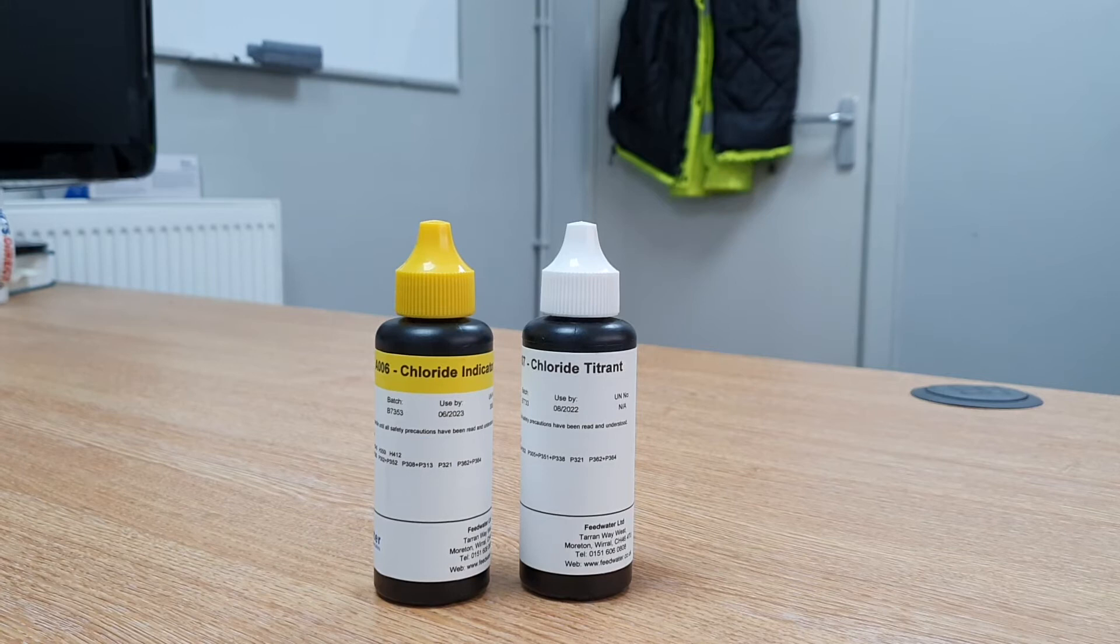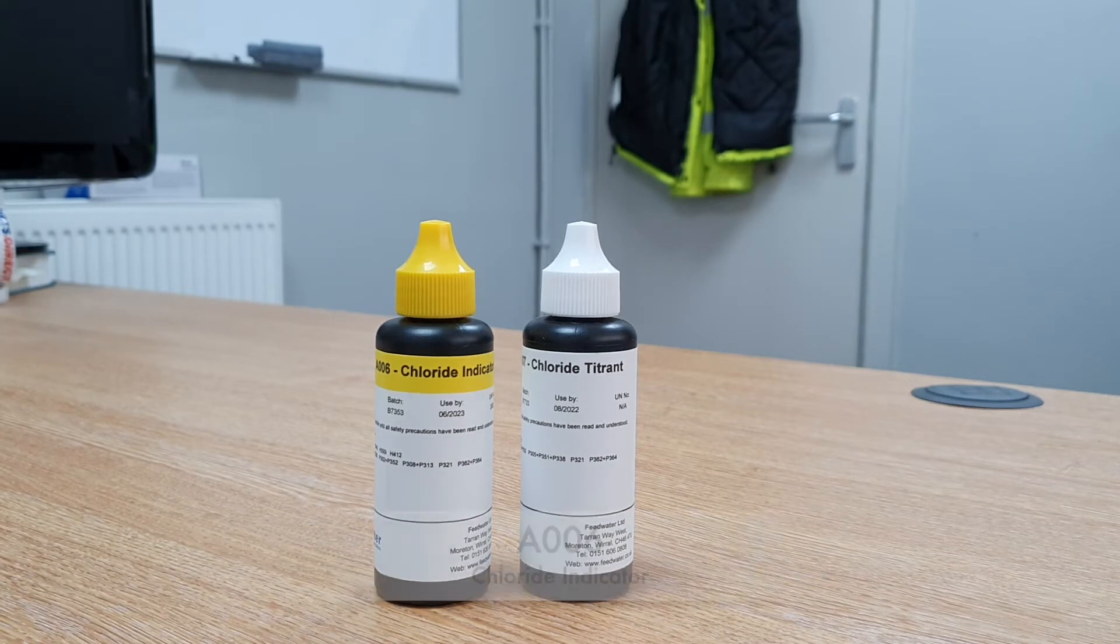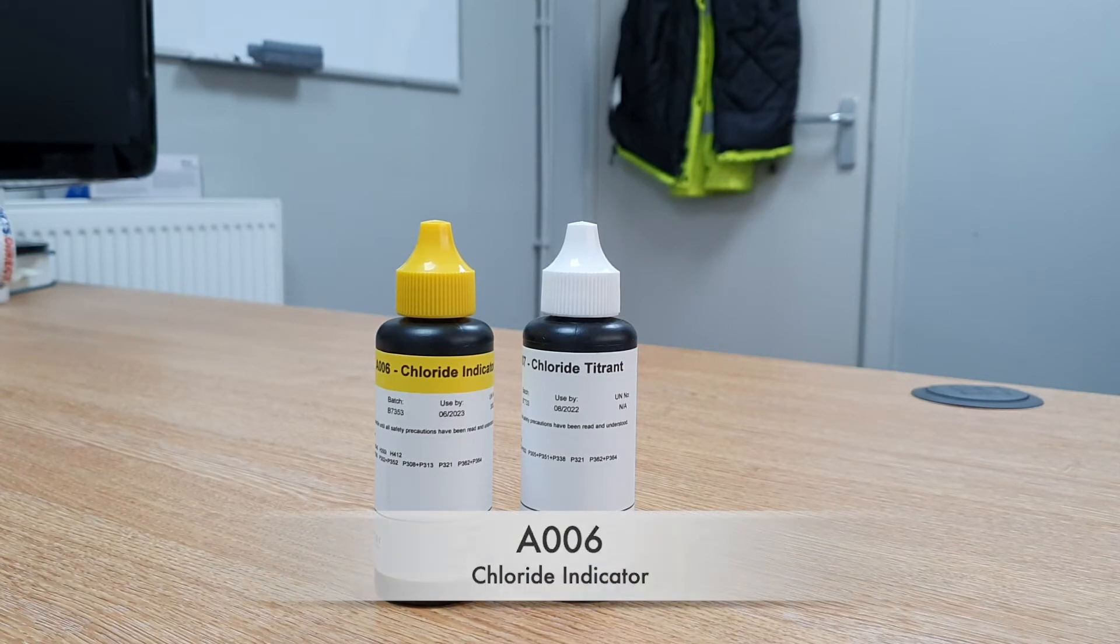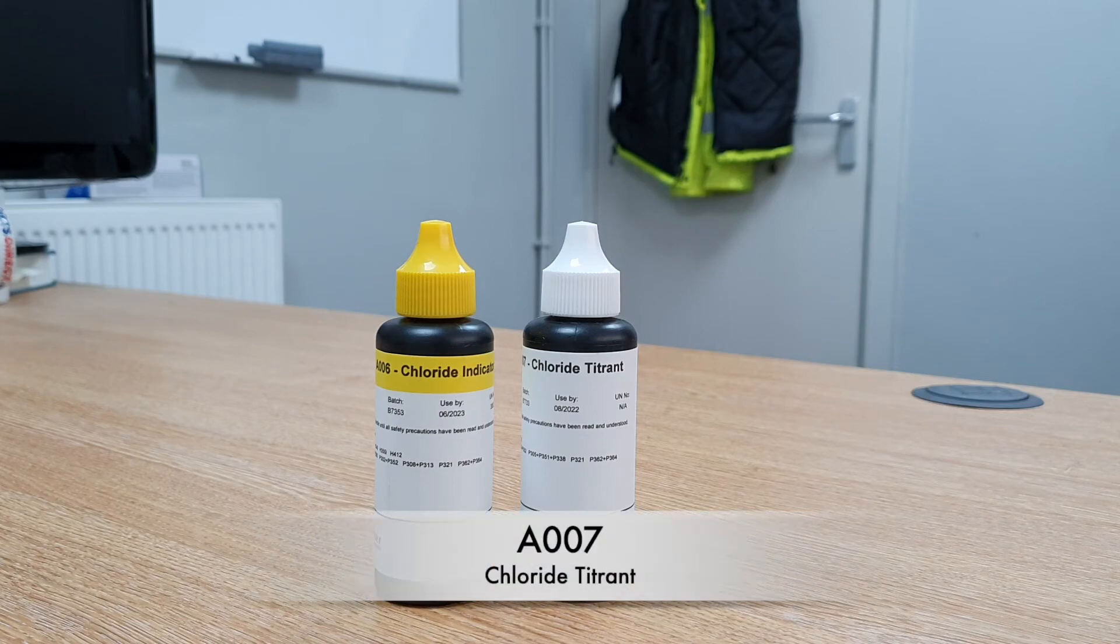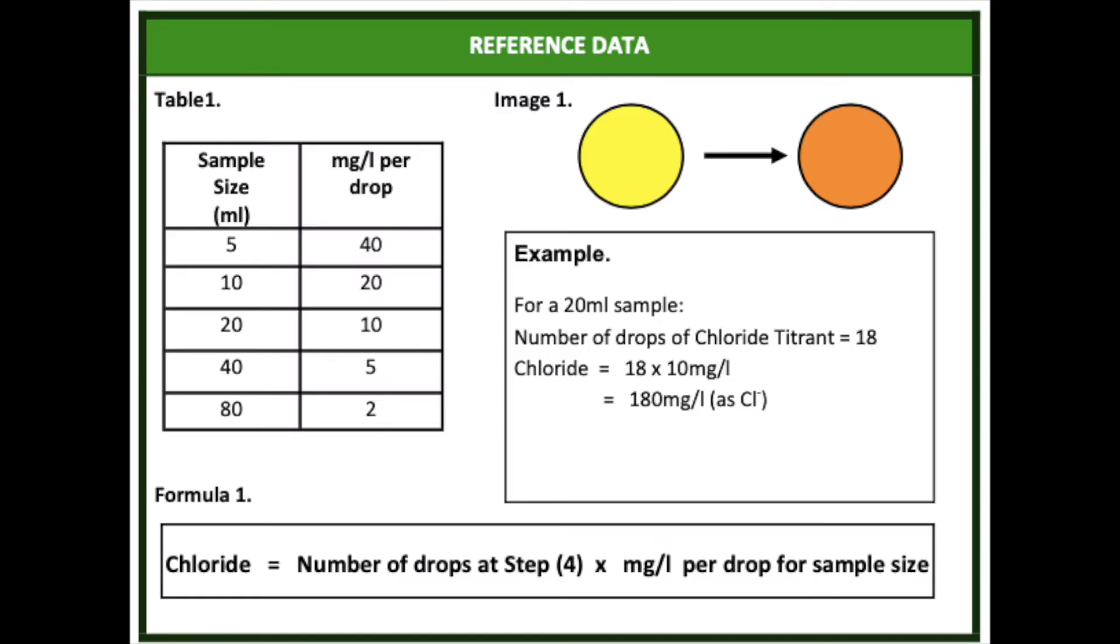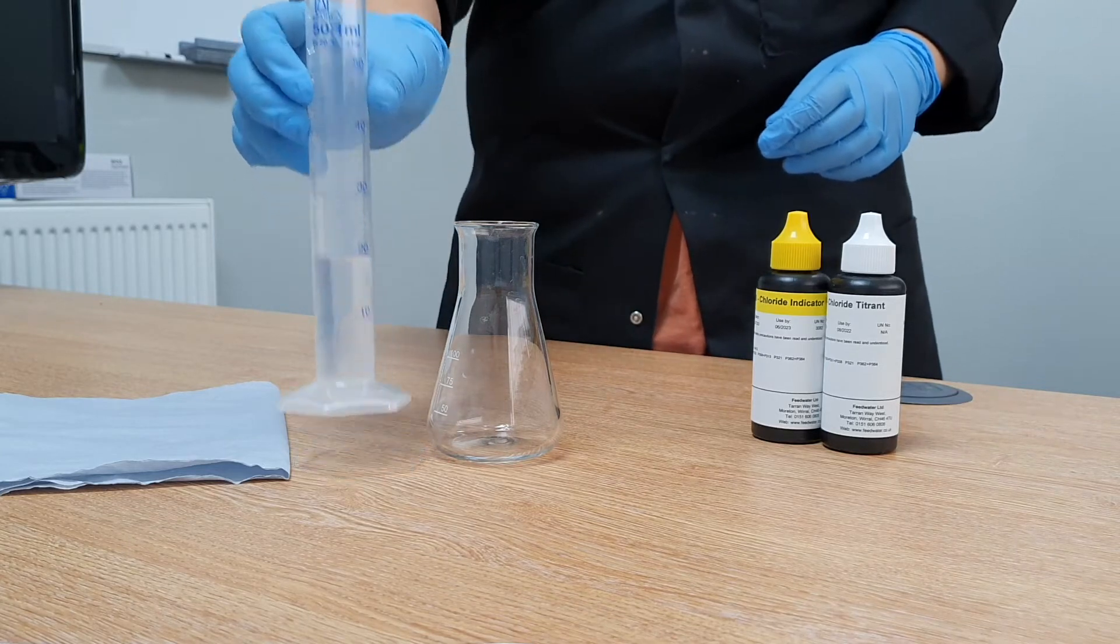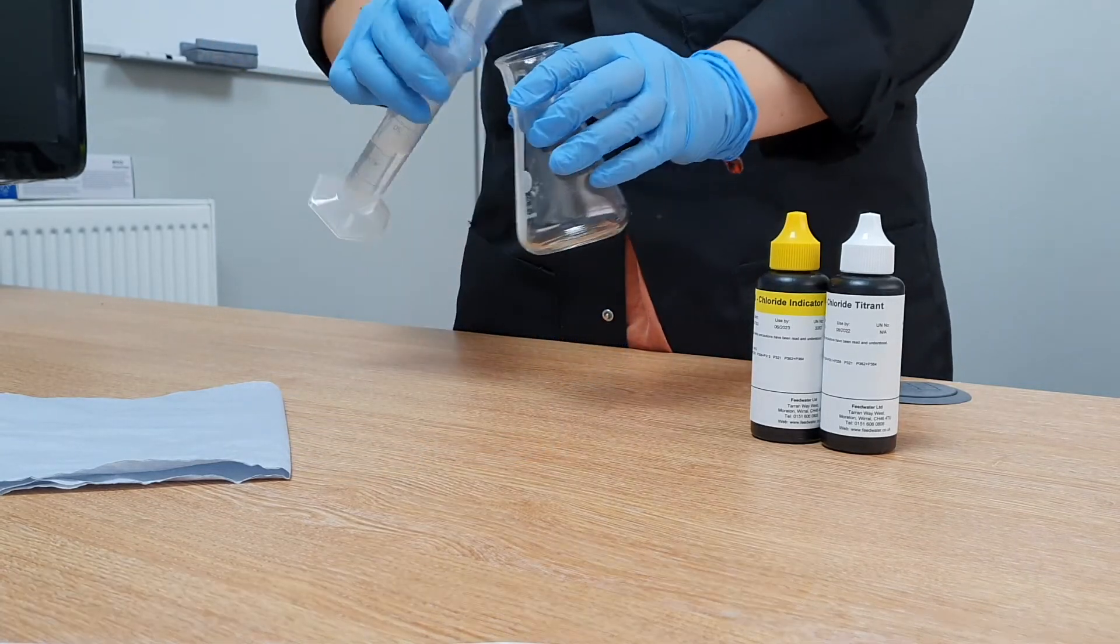For this test you will need the following reagents. Chloride indicator A006, Chloride titrant A007. Select an appropriate sample size based on the required mg per litre per drop of chloride indicator solution and filter the sample if necessary. In this demonstration we will be using a 20ml sample.